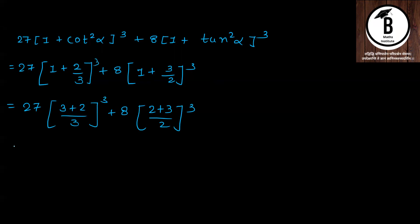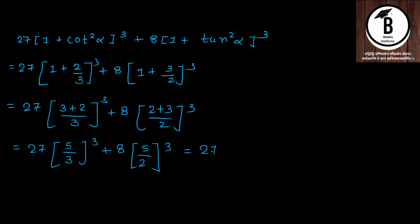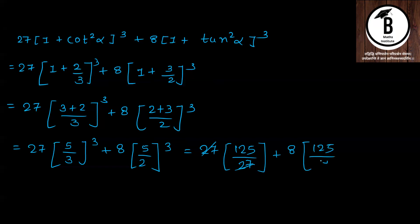Simplify करते हैं: 27 × (5/3)³ = 27 × 125/27 = 125, और 8 × (5/2)³ = 8 × 125/8 = 125। 27 और 27 cancel, 8 और 8 cancel। तो answer = 125 + 125 = 250। यानि कि हमको जो answer find करने के लिए बोला गया था, वो 250 मिल गया।